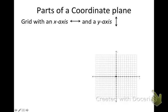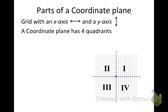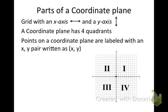Now, if you have a coordinate plane — just a quick review — the horizontal axis is called your x-axis, your vertical axis is called your y-axis. We also break the plane up into four different sections called quadrants, and they're actually numbered counterclockwise: 1, 2, 3, and 4.